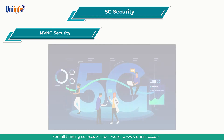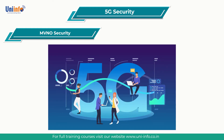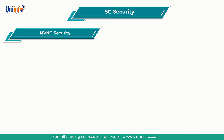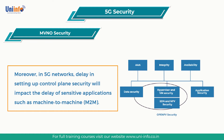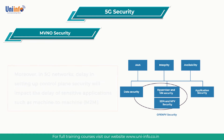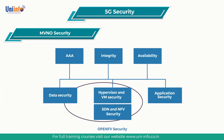Due to the nature of 5G networks and extremely fast communication, it is important how and which authentication mechanisms are chosen, since even the lowest latency can have considerable effects on communication. Moreover, in 5G networks, delay in setting up control plane security will impact the delay of sensitive applications. Machine-to-machine non-access stratum signaling is an example of control plane signaling which may introduce delays in 5G.